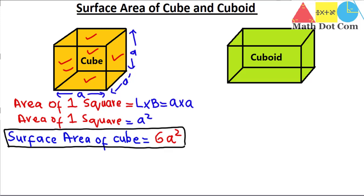Now apply a similar technique to the cuboid, but keep in mind that in a cuboid all dimensions are different — the length, width, and height are all of different measurements. So we cannot adopt the same strategy as for the cube. In a cuboid, out of the total six faces, two faces are of the same measurement.